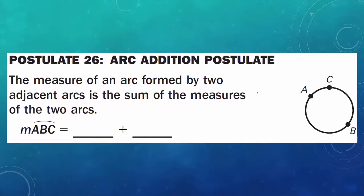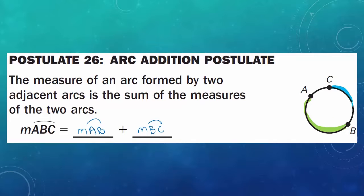So the measure of arc ABC, which is a major arc, is equal to the measure of arc AB plus the measure of arc BC. This arc AB and this arc BC — when you add arc AB plus arc BC, you get the arc ABC.